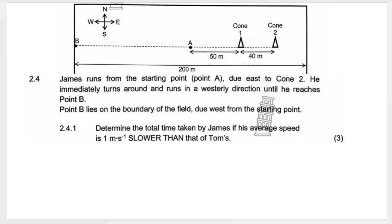Question 2.4 is James now, another person running from the same starting point. He's running east to cone 2. So James is going all the way here. He immediately turns around and runs in a westerly direction until he reaches point B. Point B is all the way over here due west. So he runs from A to cone 2, then all the way over here to point B. Take note that A was in the middle of the field. Remember the field is 200 meters long. So if A is in the middle, it means from B to A, this distance over here is 100 meters.